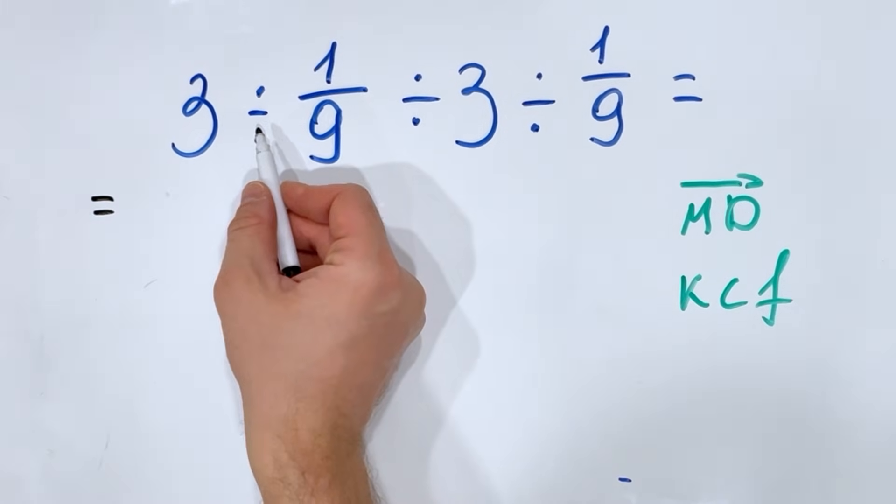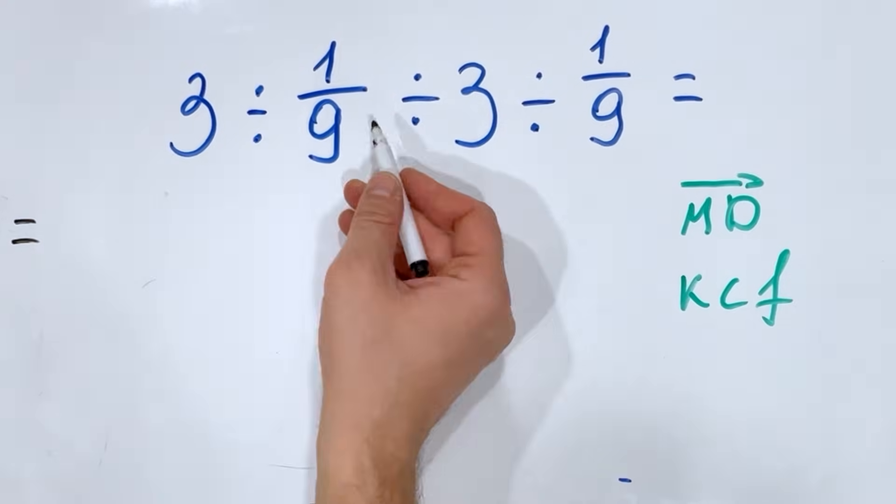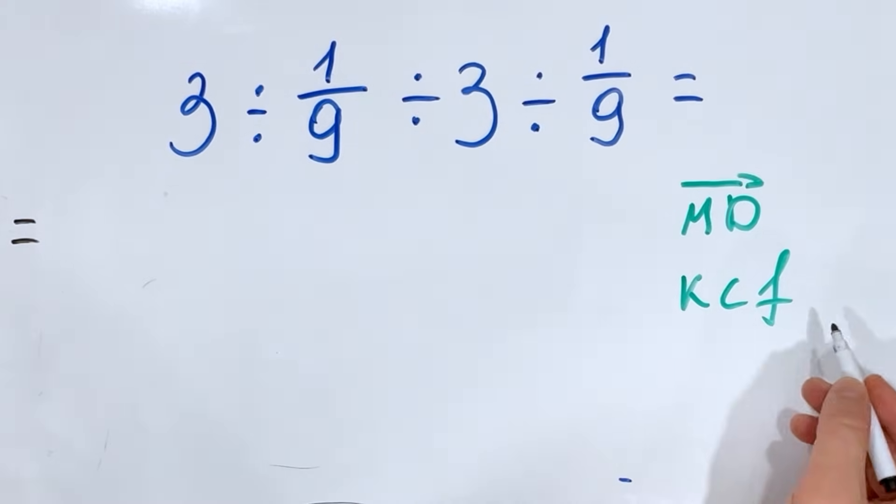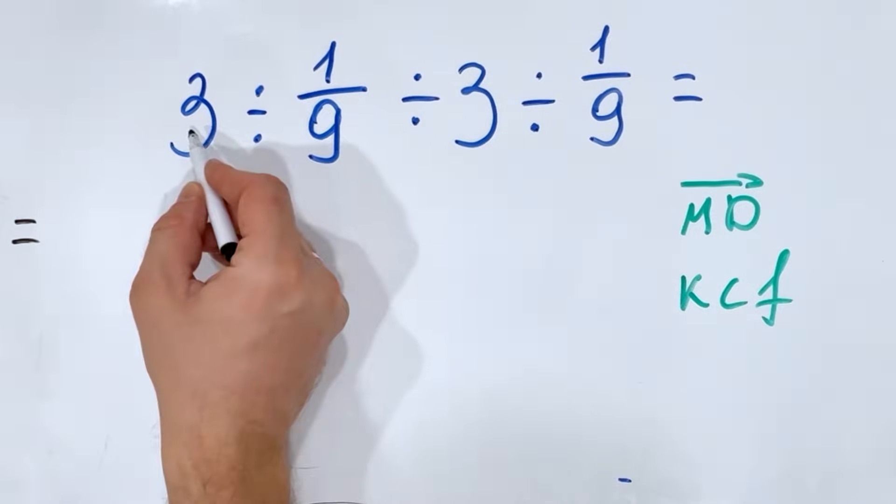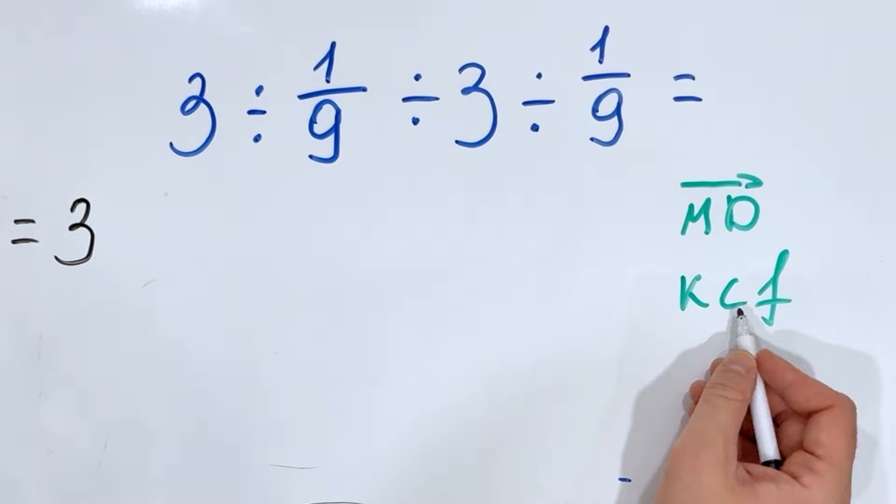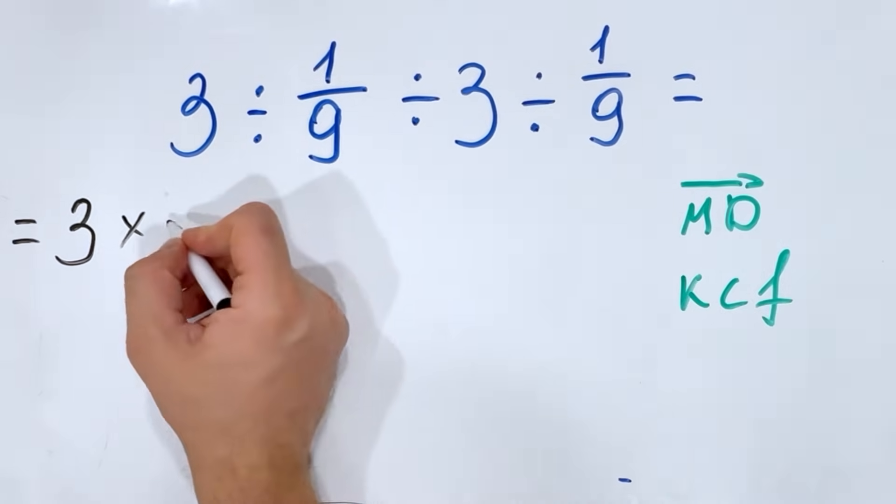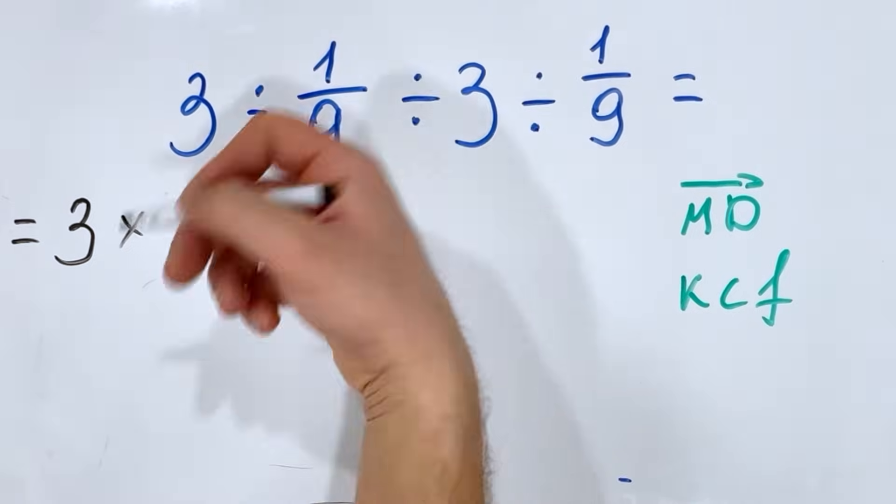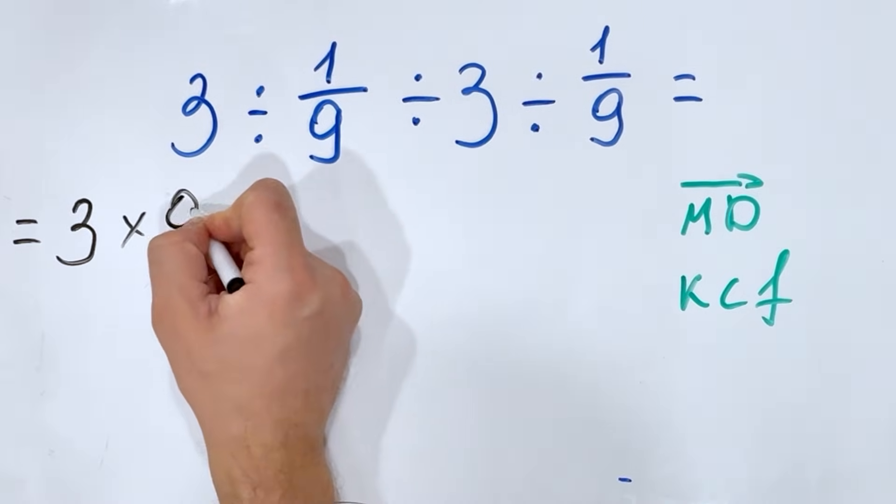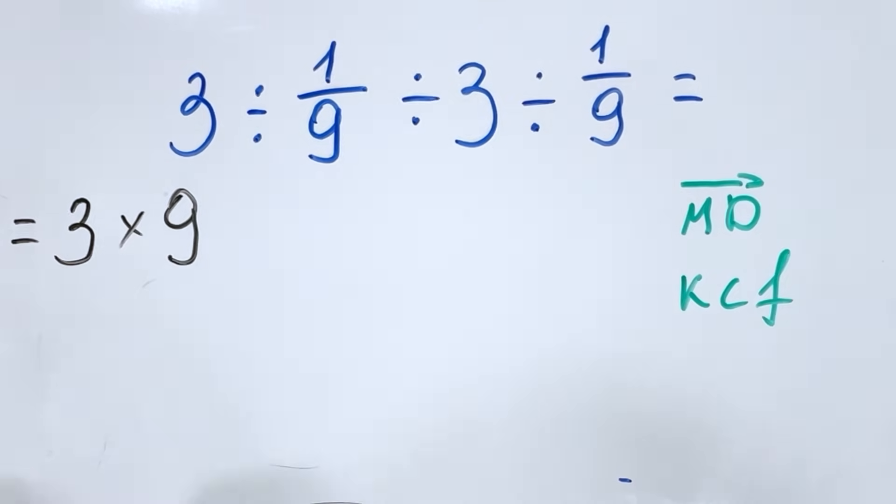We have 3 divided by 1 over 9. Here we have the KCF rule which stands for Keep the first, so we are keeping the first term, Change the sign, and we are Flipping the second. So we have 1 over 9, flipping is 9. Therefore we multiply by its reciprocal.